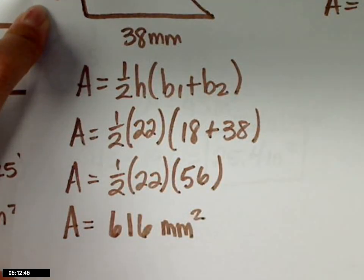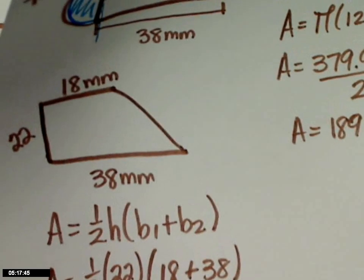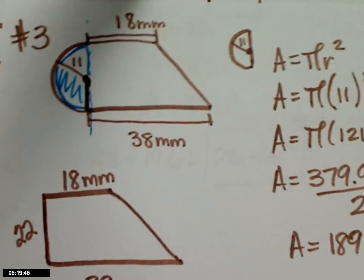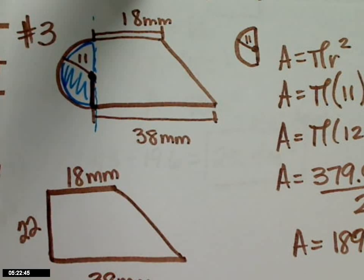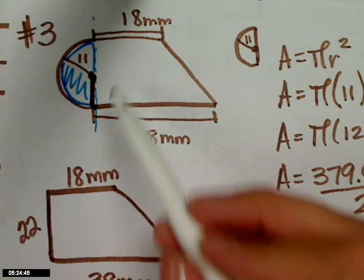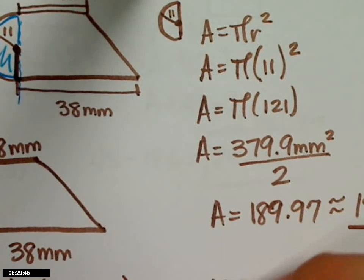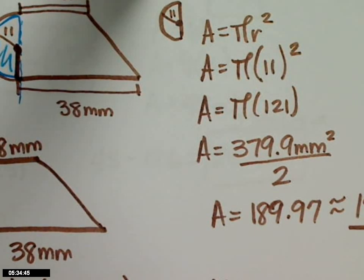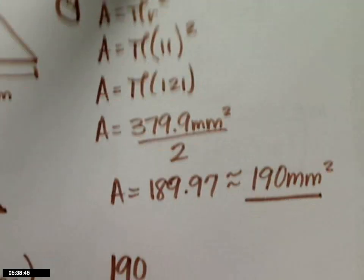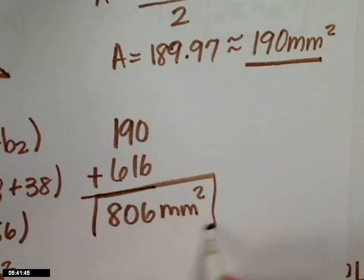Now, is this my final answer? No. What am I going to subtract? Why would I subtract though? Are we not looking for the entire thing? Then you add them. Yeah, I got to add them. So 190 plus 616 equals 806. 806 millimeters squared. Don't forget units, and units are squared.